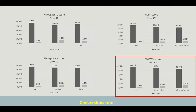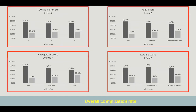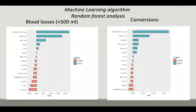For the conversion rate, Kawaguchi, ALS, and Azagawa scores were related to conversion rate, whereas the IVARTE score was not correlated with this variable. Similarly to other experiences, the overall complication rate was not correlated with any of the difficulty scores. For this reason, we applied a machine learning algorithm using random forest analysis to compare the ability of the different difficulty scores to identify these different outcome variables.